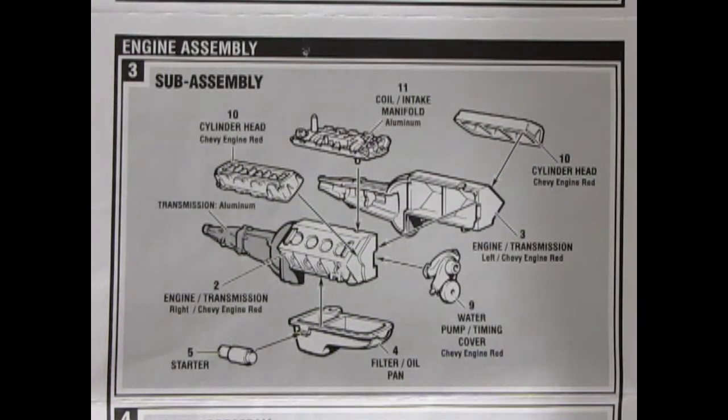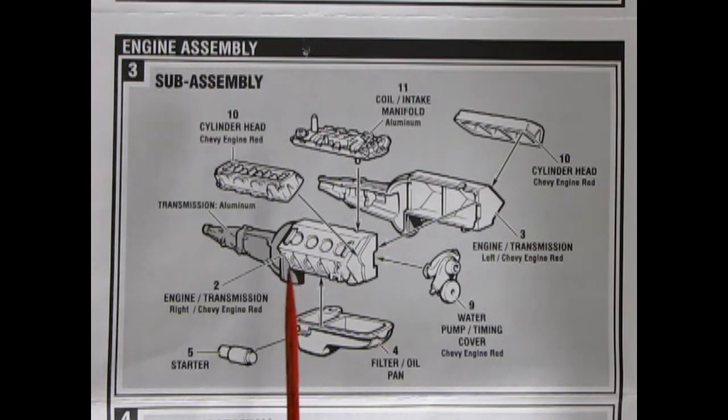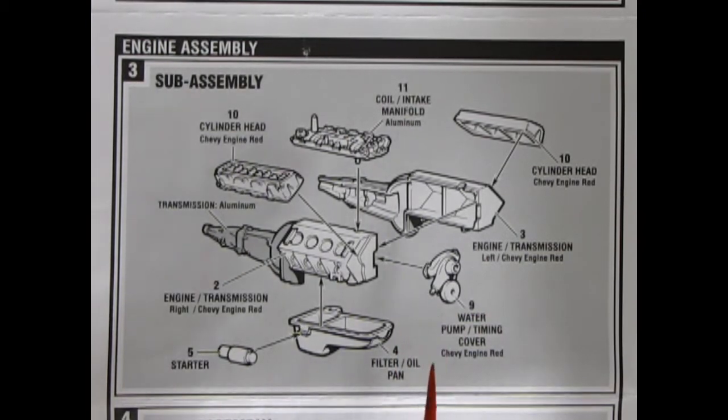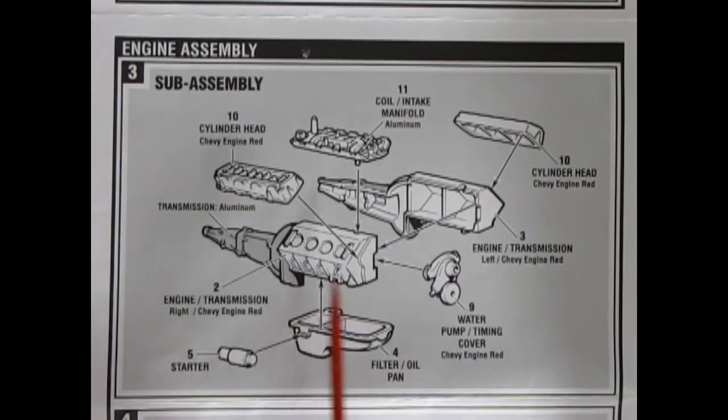Next up is our engine assembly, sub-assembly. And here we can see this great big 454 cubic inch Chevy super motor. May even be bigger. If you guys are more familiar with the Baldwin Motion stuff, and how they bored them out, and what their sizes were, let me know in the comments down below.